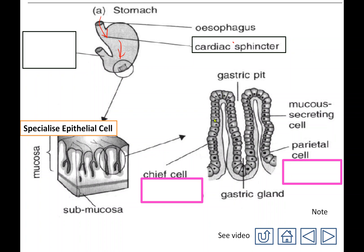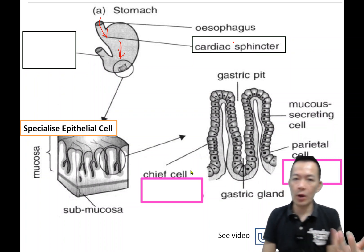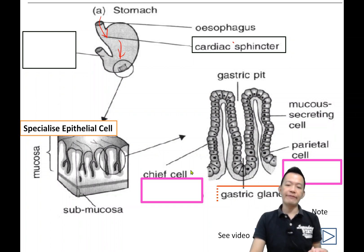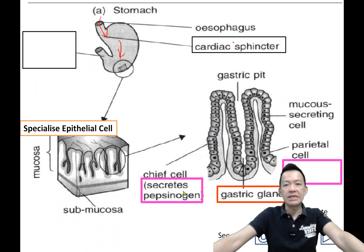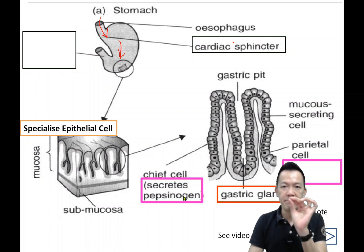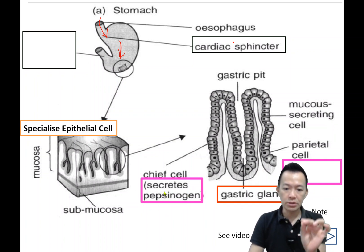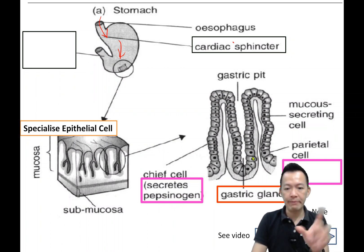The gastric glands are formed from these specialized epithelial cells — 它们会形成胃腺，表面放出很多分泌物. The first most important type is called the chief cell. The function of the chief cell is to secrete pepsinogen. Pepsinogen is an inactive form of pepsin.